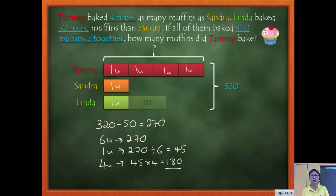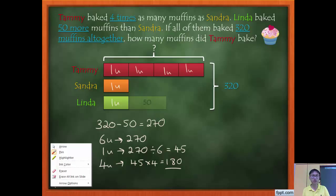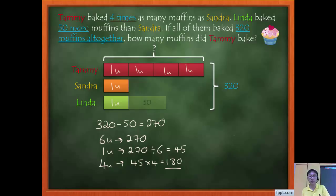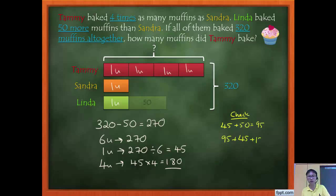Tammy has 180 muffins. Now let's check. Tammy has 180. Sandra has 1 unit, which is 45. Linda has 1 unit plus 50, so 45 plus 50 equals 95. Now adding all three: 95 plus 45 plus 180 should give 320. And it does — so the answer is correct. That's how you check.